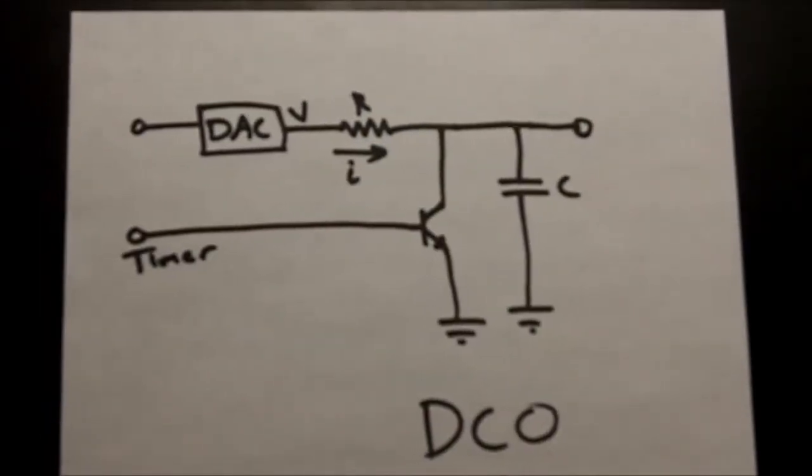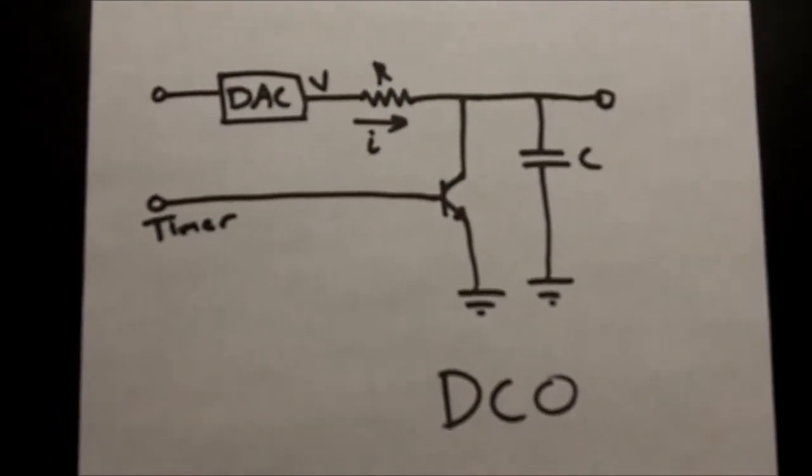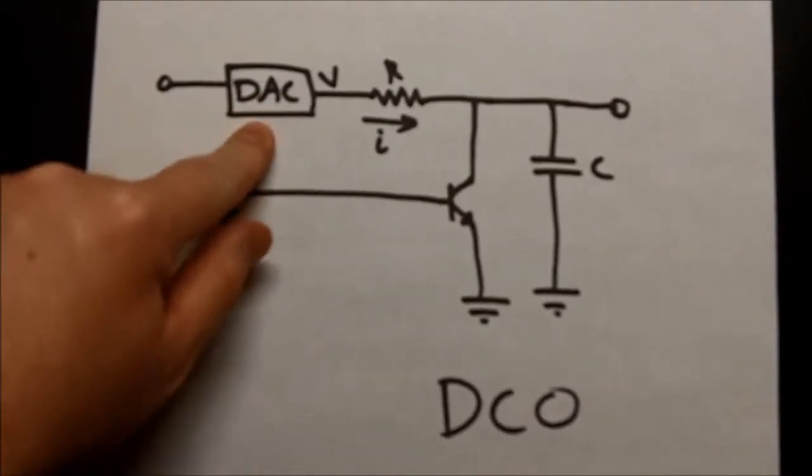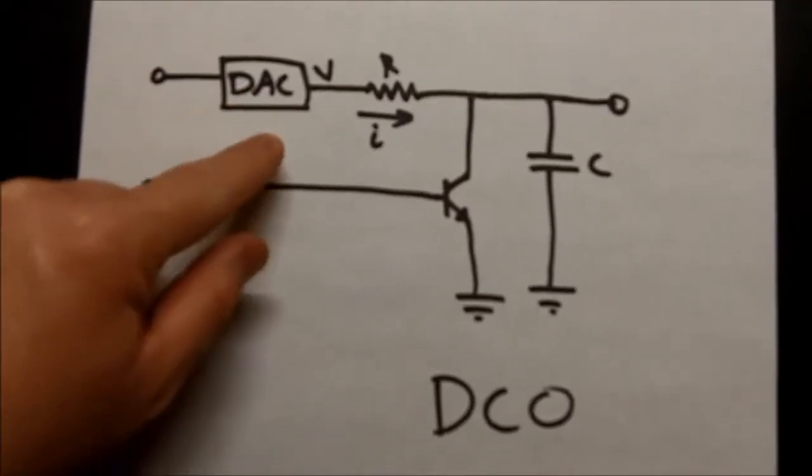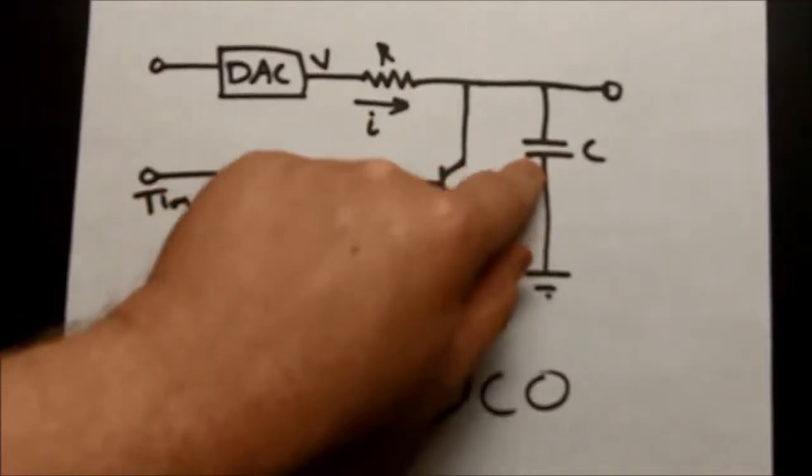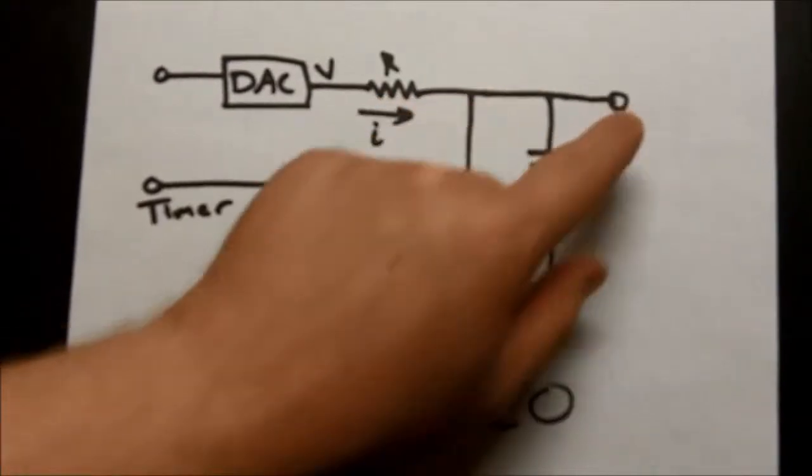Greetings everyone. I'm sure you remember this DCO circuit that I did a while back. You got your digital to analog converter here going through a resistor. You got a reset transistor here to an integrating capacitor output out.